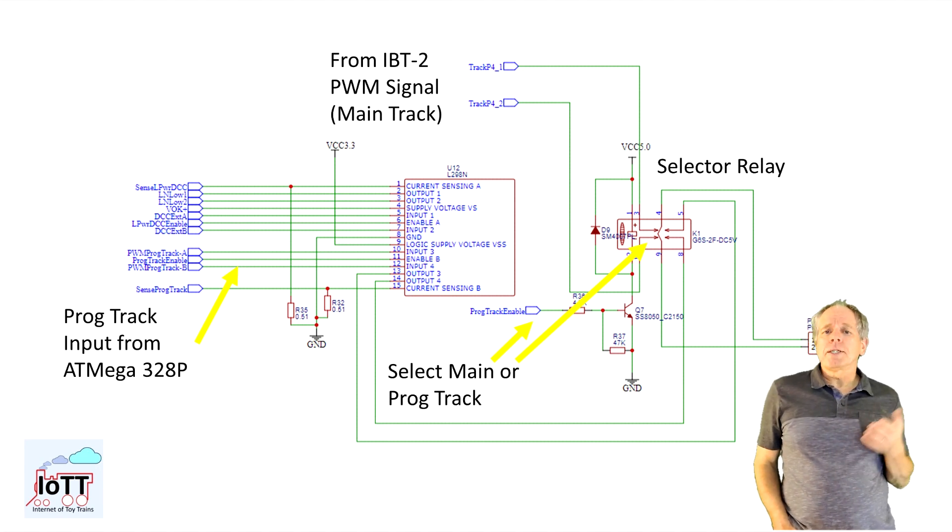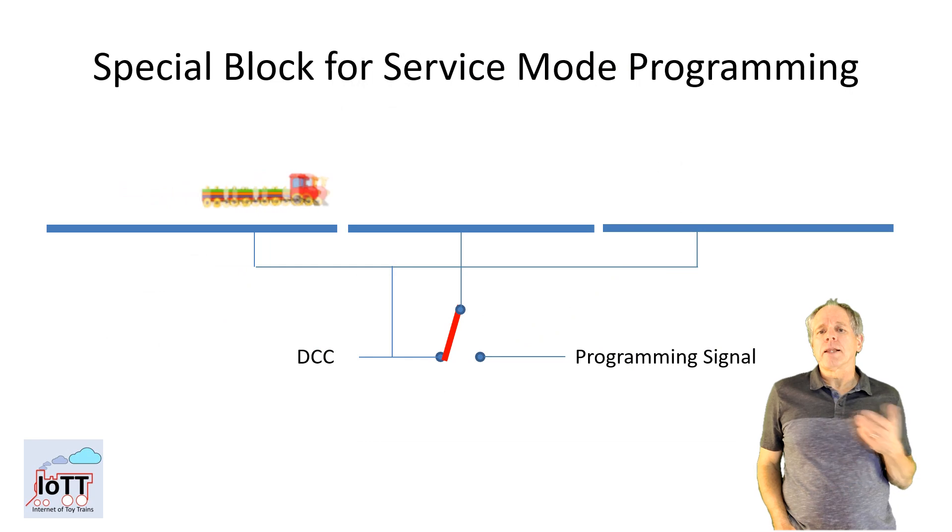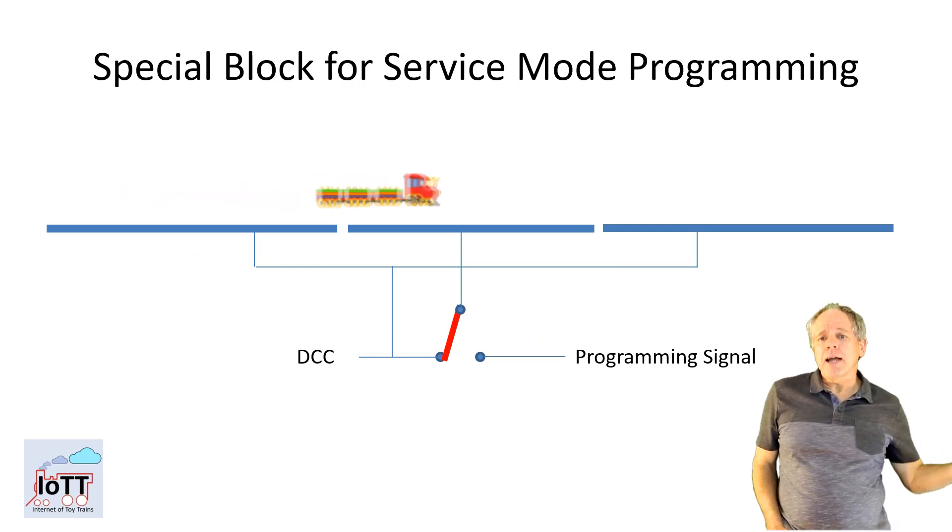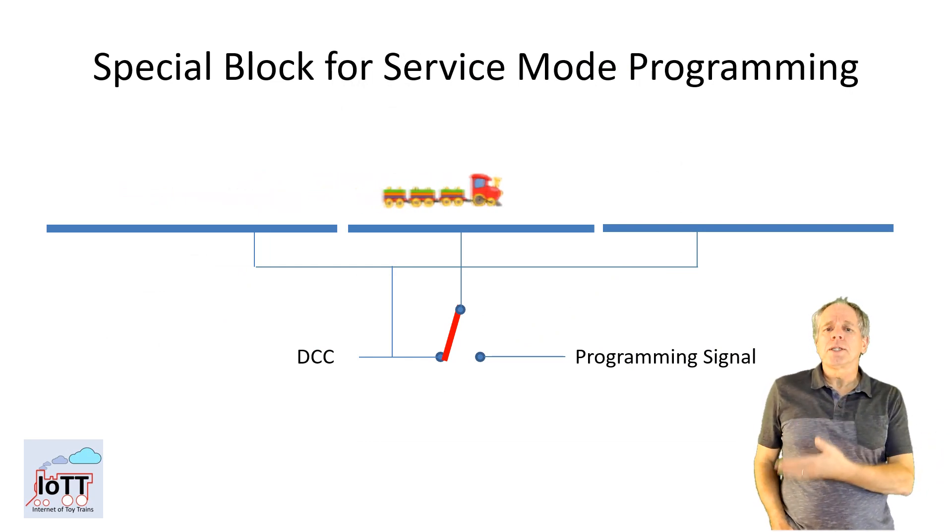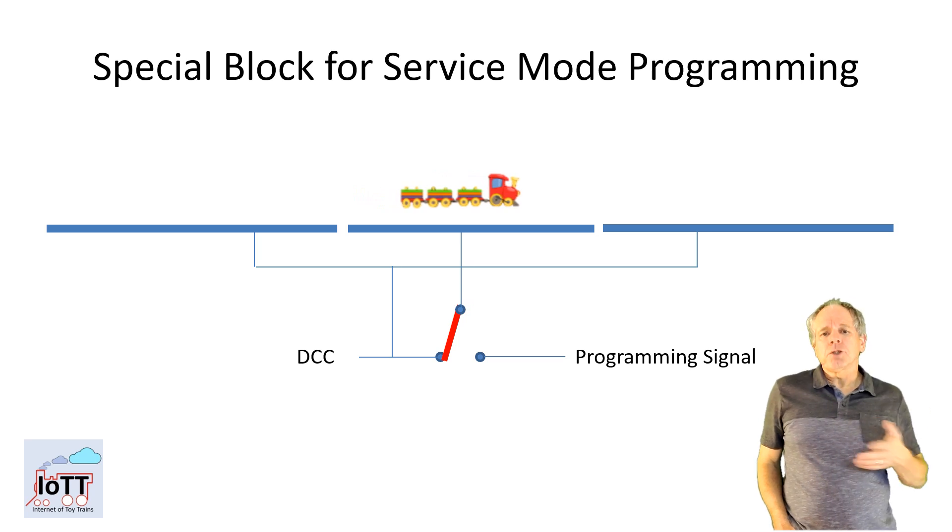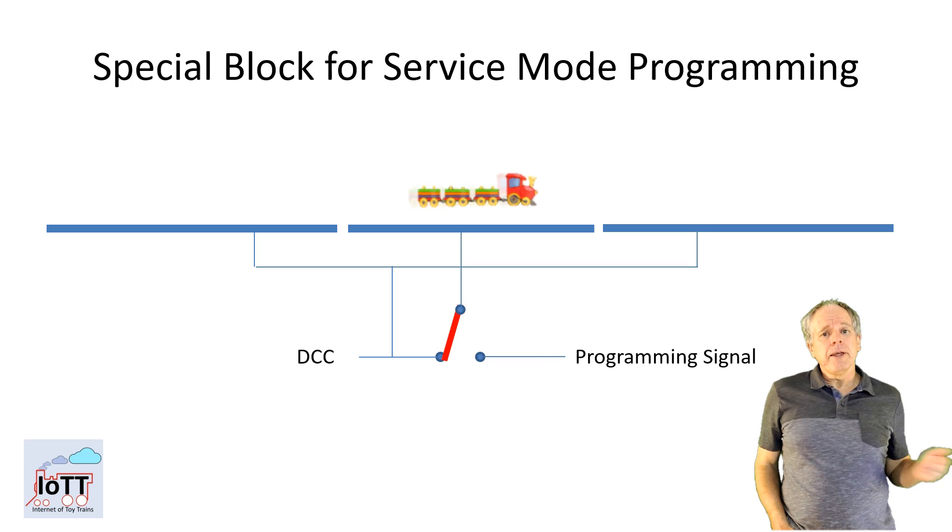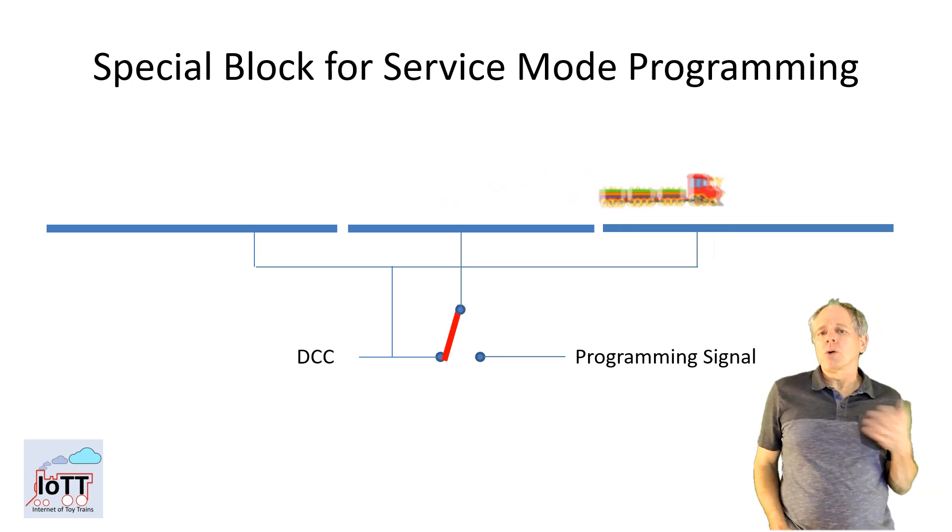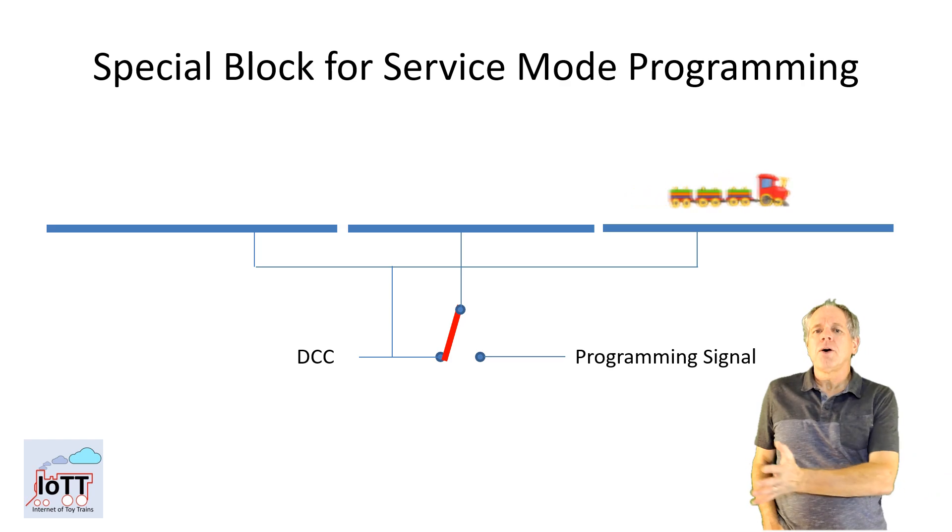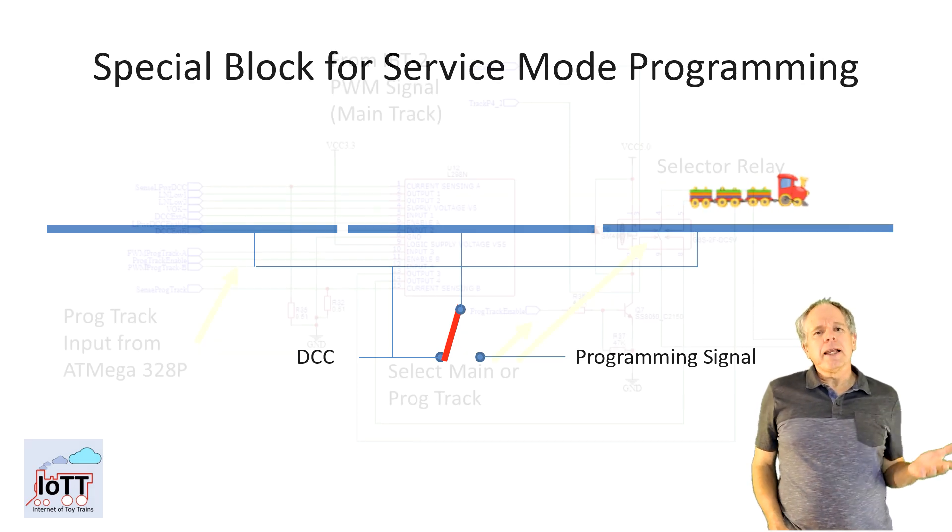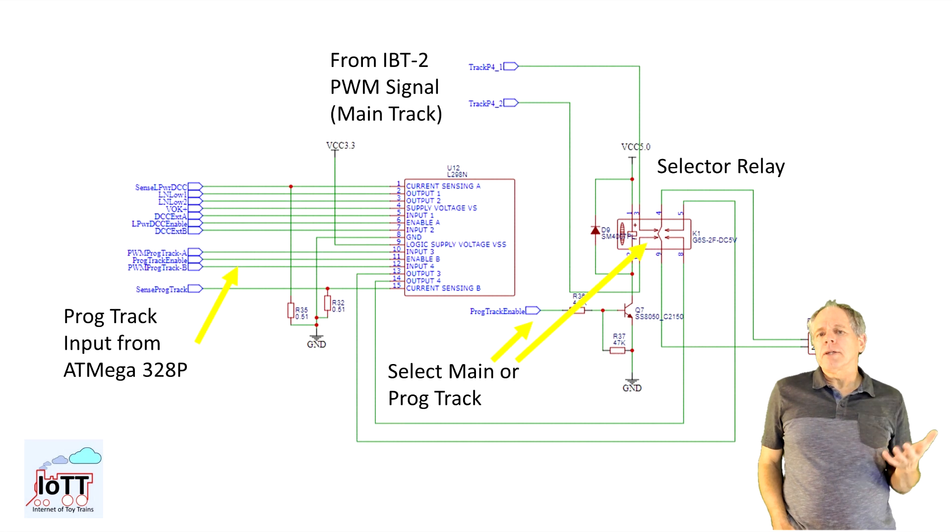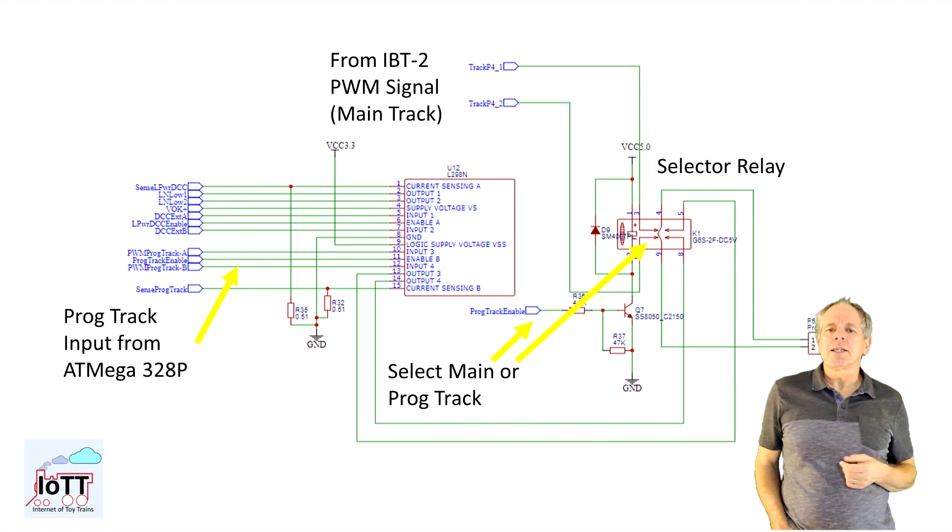The relay allows the programming track output to select the output signal from either the IBT2 main booster or the L298. With that approach it is possible to have a special track section on the layout where you can drive on with a locomotive using DCC and then switch the mode of the track and do service mode programming without having to remove the locomotive from the main track. When done the block is switched back to main track and the locomotive can continue running on DCC. The relay is activated by another output of the processor so I tested that as well and it worked as intended.